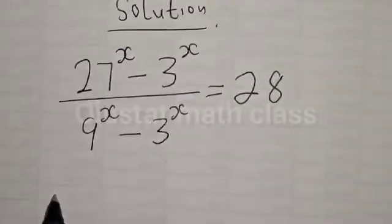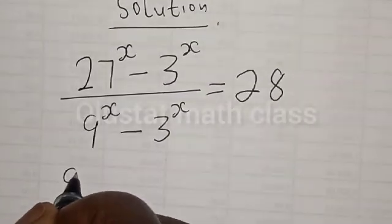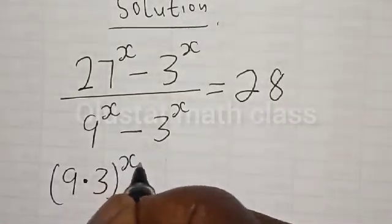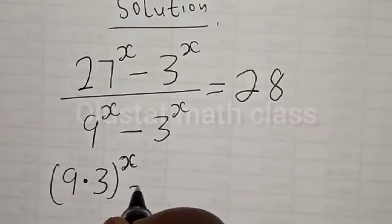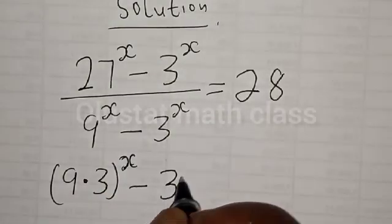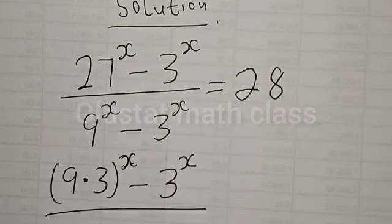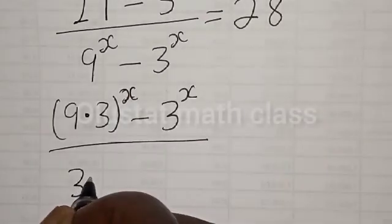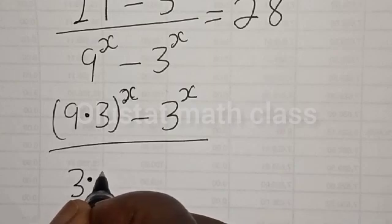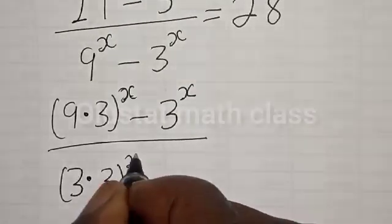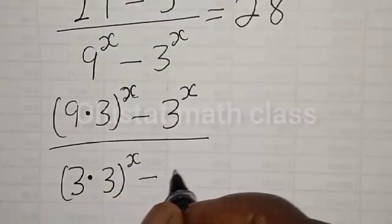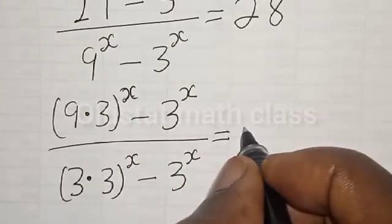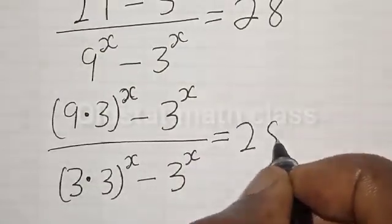Then 27 can be written as 9 multiplied by 3, so we have 9 multiplied by 3, raised to power s, minus 3 raised to power s, divided by 9 — which is 3 squared — raised to power s, and this is equal to 28.